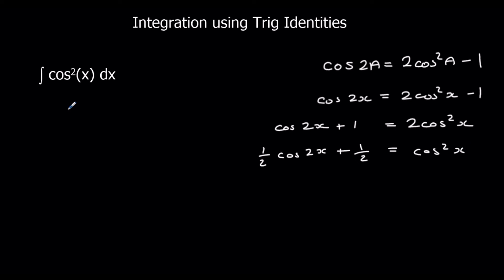So now I can substitute that in. So for cos²x, I can put in half cos2x plus half. So half cos2x plus half with respect to x. And now I'm just going to integrate that.